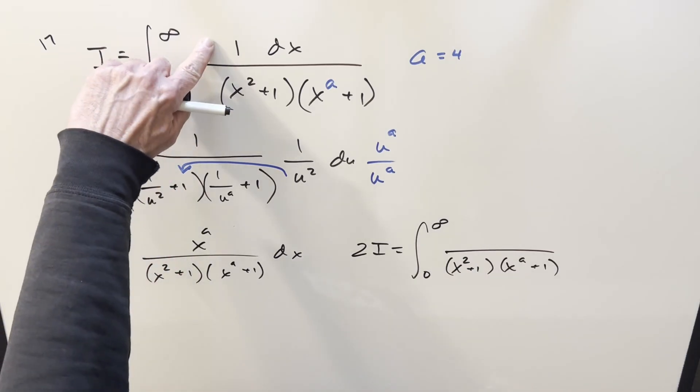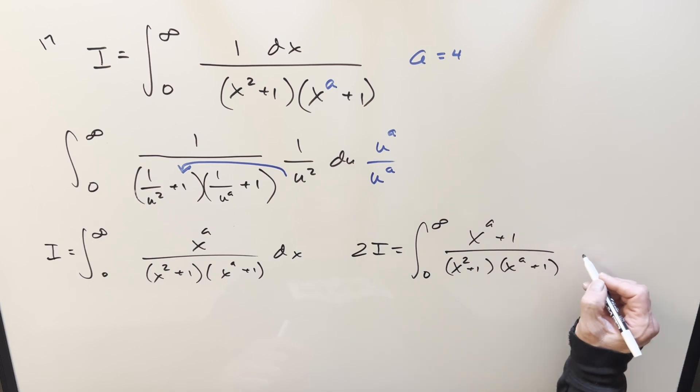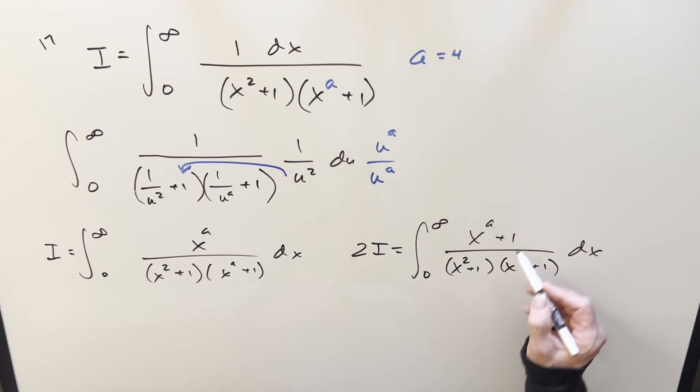But when we add numerators, we get x^a + 1. So we just have x^a + 1 here, dx. And I think you can see the payoff is now this just cancels with this. And so that's why I said this a isn't going to really matter.